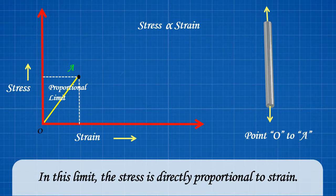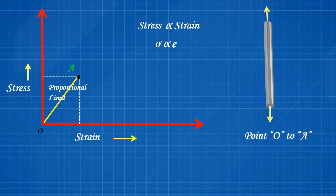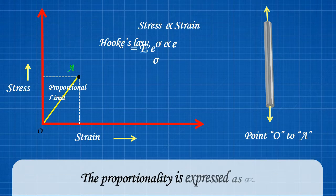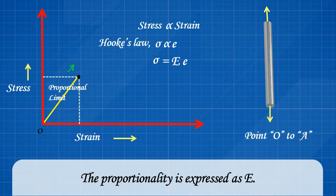In this limit, the stress is directly proportional to strain. That is σ proportional to ε. That means the steel rod obeys Hooke's law in this stage. The proportionality is expressed as E. Thus, σ is equal to E into ε.